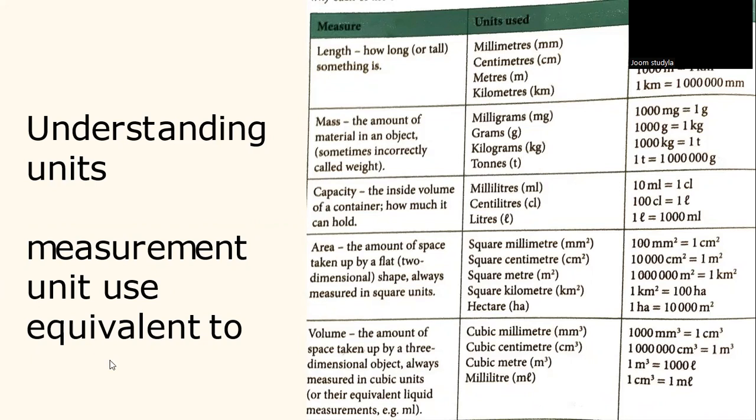Mass is the amount of material in an object, sometimes incorrectly called weight. The units that we use are milligrams mg, grams g, kilograms kg, and tons t.